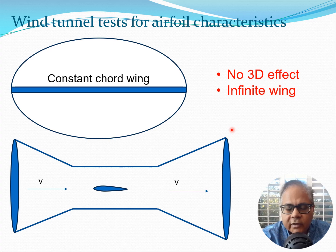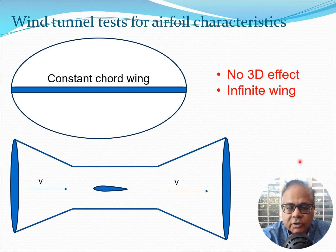Whenever we are thinking of any airfoil cross section we are essentially assuming what is known as an infinite wing. In an actual wing, there is some flow from below the wing to the top, which constitutes a three-dimensional effect. In an airfoil section, we consider a two-dimensional wing. So what we do is make a wing that spans from one end of the wind tunnel to the other — a constant chord wing.